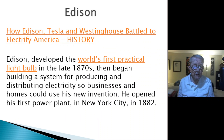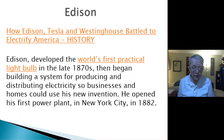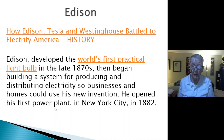Edison developed the world's first practical light bulb in the late 1870s, then began building a system for producing and distributing electricity so businesses and homes could use his new invention. He opened his first power plant in New York City in 1882.